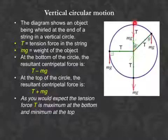When the object is at the top of the circular motion, the two forces are both acting down and therefore towards the center of the circle. So both of these added together give the centripetal force.